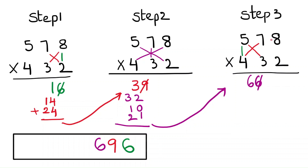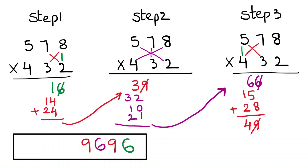Now do the cross multiplication for the hundreds and tens places: 5 times 3 is 15, 7 times 4 is 28. Add all the numbers — this will be 49. Cross the 9 and place it in the final answer.